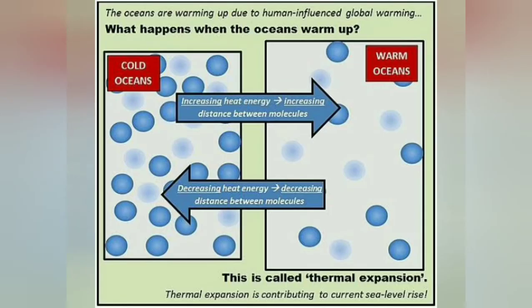Let's take the example of the ocean. The oceans are warming up due to human-influenced global warming. When the oceans warm up, it increases the heat energy and increases the distance between the molecules. When it cools down, it decreases the heat energy and decreases the distance between the molecules — and this is called thermal expansion. Thermal expansion is contributing to the current sea level rise.